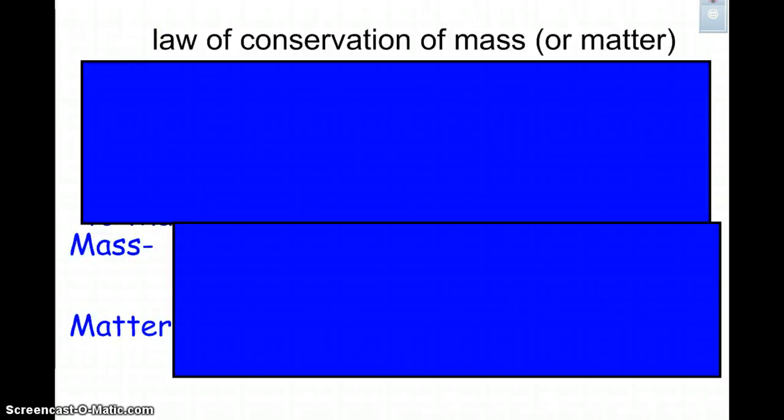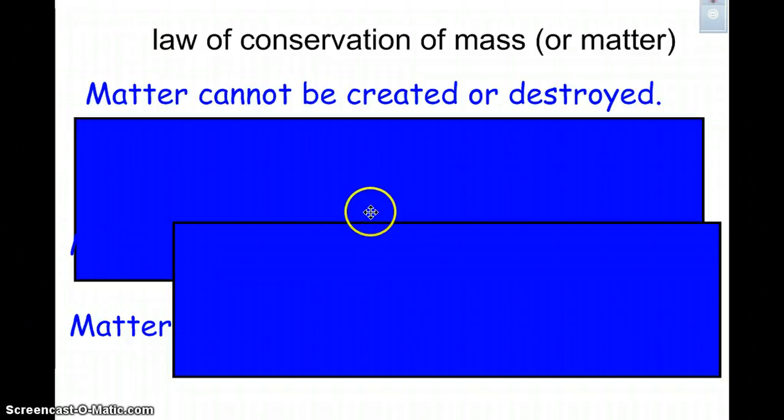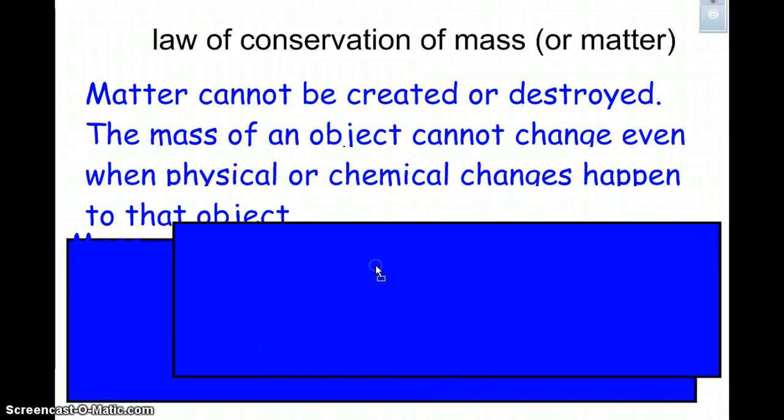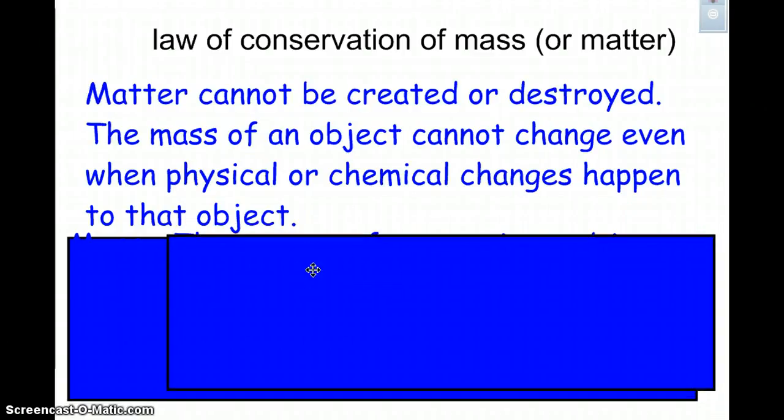The Law of Conservation of Mass or Law of Conservation of Matter states that matter cannot be created and matter cannot be destroyed. This means that the mass of an object cannot change even when a physical or chemical change happens to that object. The mass is never going to change. You could have energy created or break the matter into smaller pieces or the matter could change states, but it's not going to change the amount of matter.